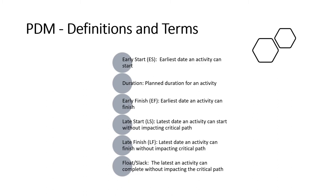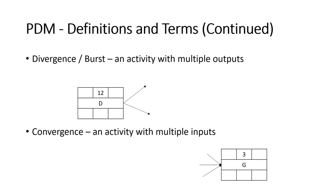I will provide follow-up parts to this presentation that present the equations relevant to calculating these components. Here are some other essential terms. Divergence — an activity with multiple outputs. Convergence — an activity with multiple inputs.